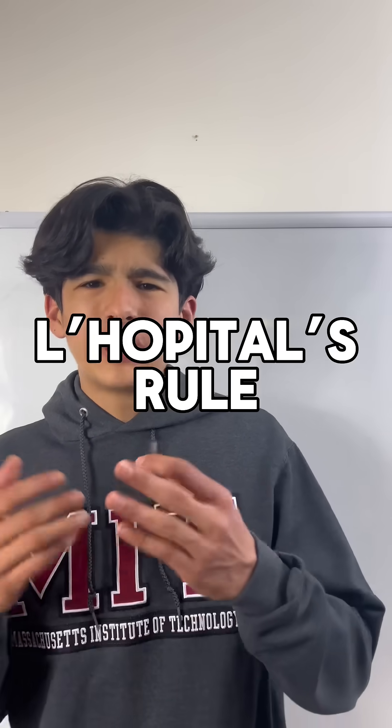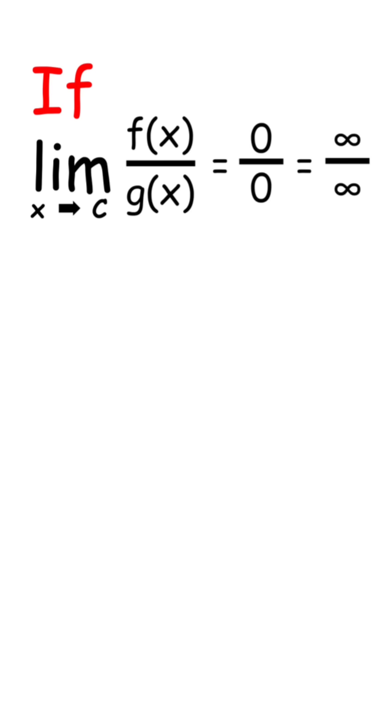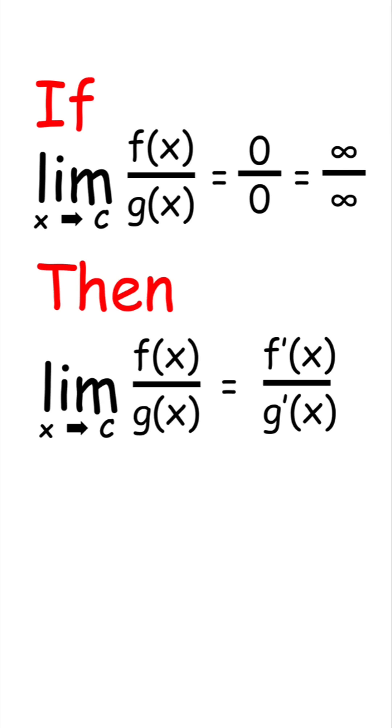Well, here's where L'Hopital's rule comes in. It's a rule that says that if you have a limit that evaluates to 0 over 0 or infinity over infinity, you can just take the derivative of both top and bottom.